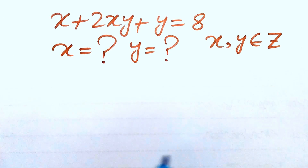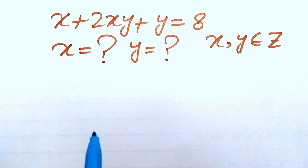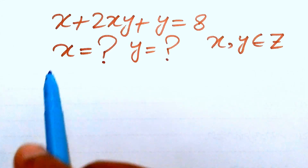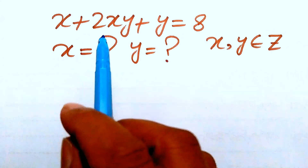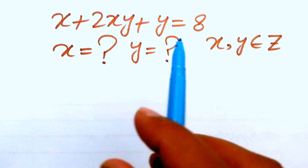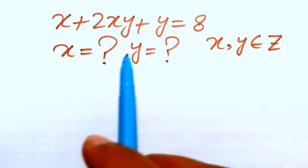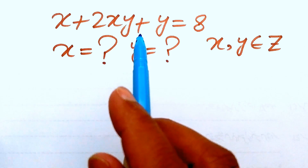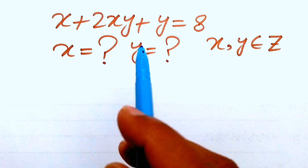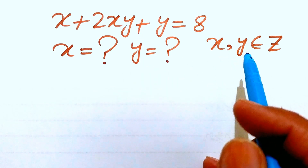Hello everyone, welcome back to the Map of Mathematics. In this video, we are going to solve this nice algebra problem: x plus 2xy plus y equals 8. We will find the values of x and y from this equation, where x and y are integers.